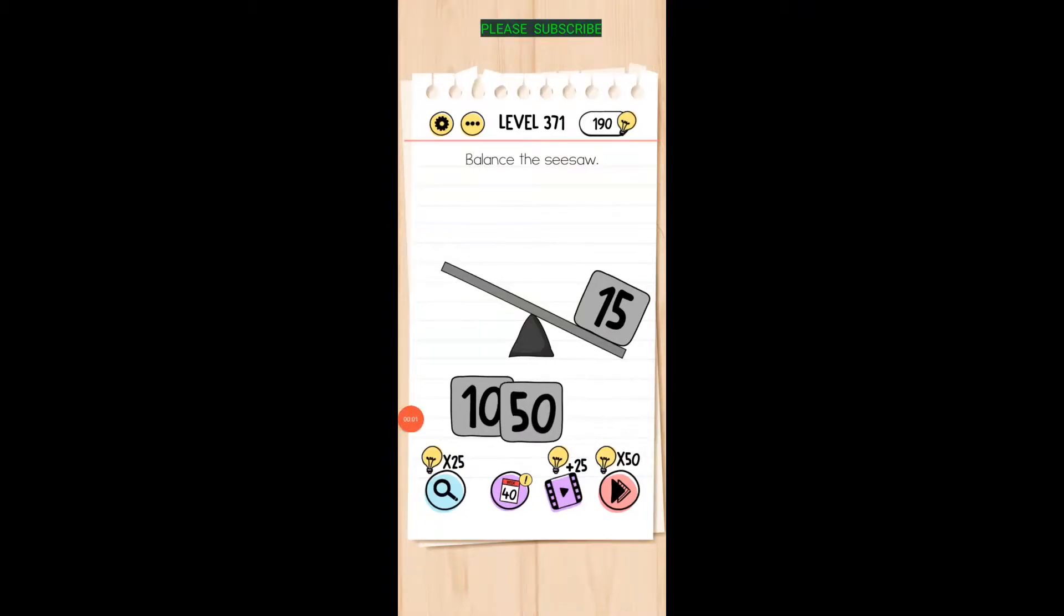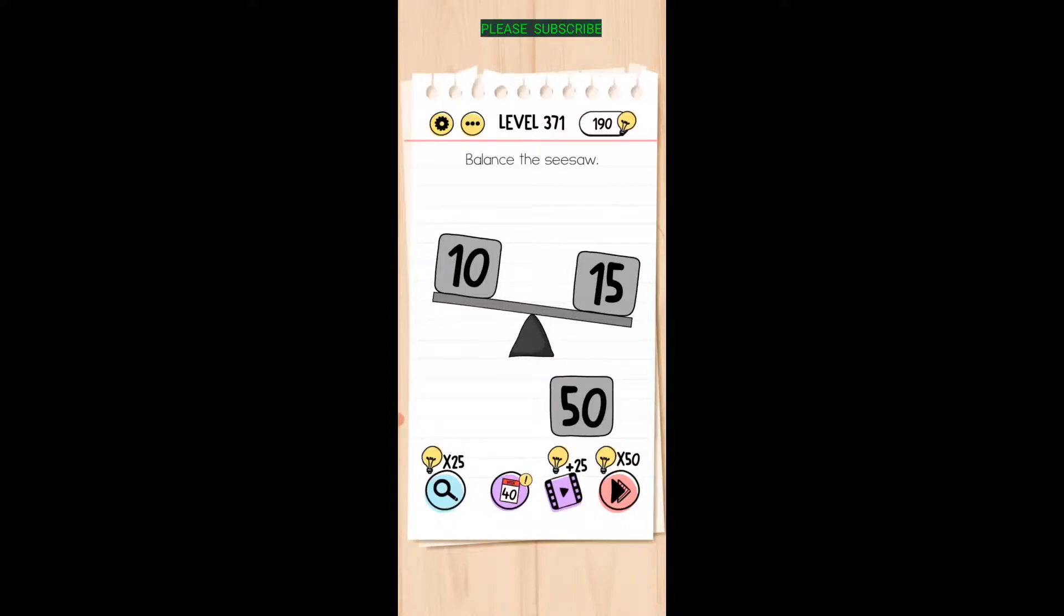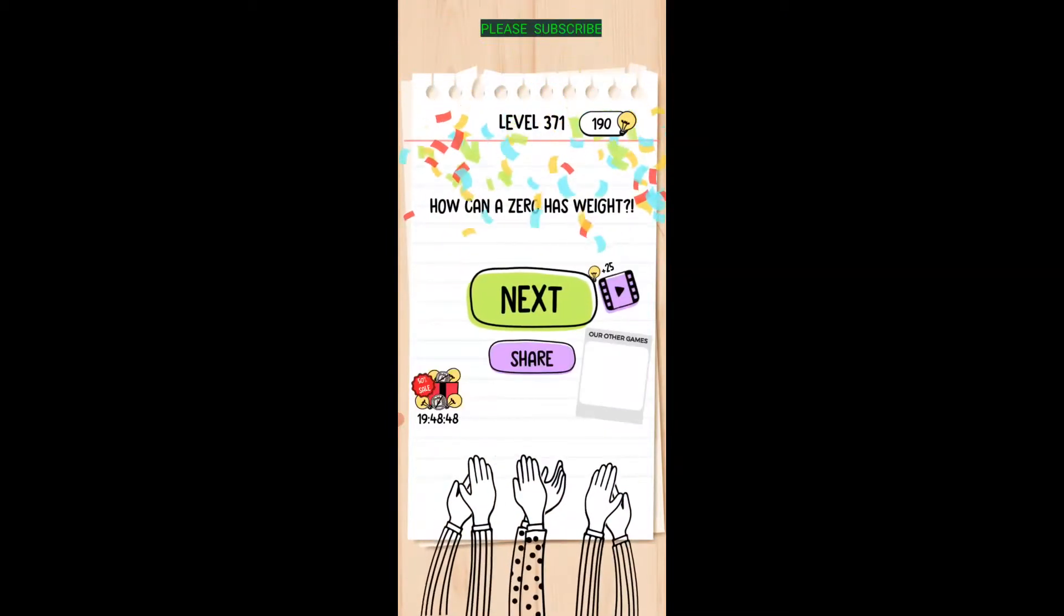I balanced the seesaw. 10 and 15. All right so just swipe off that zero and then put it up there on the top, it becomes a five.